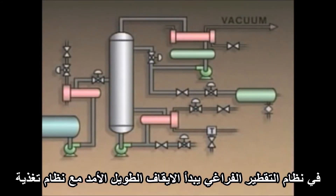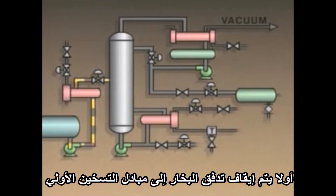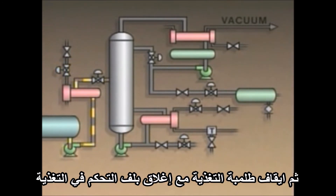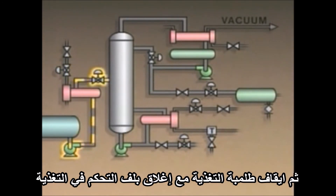In this vacuum distillation system, a long-term shutdown begins with the feed system. First, the steam flow to the preheater is shut off. Then the feed pump is shut off while the feed control valve is closed.